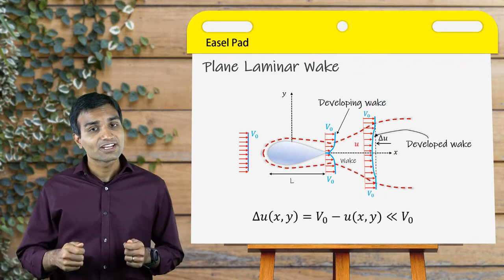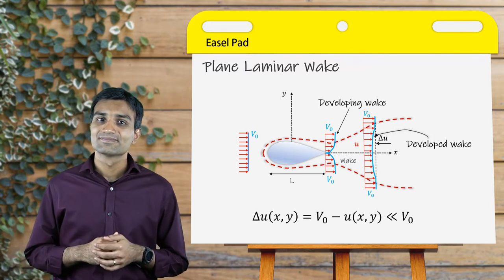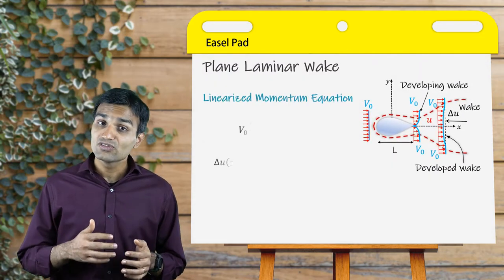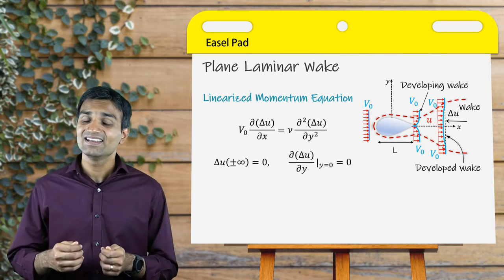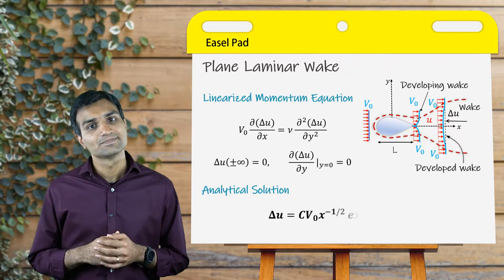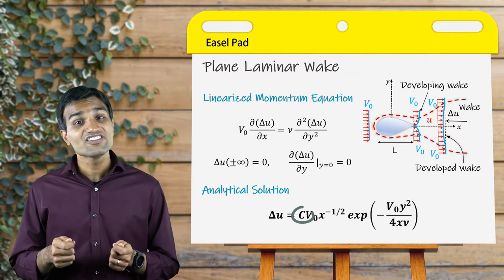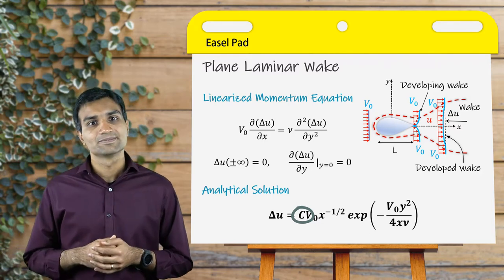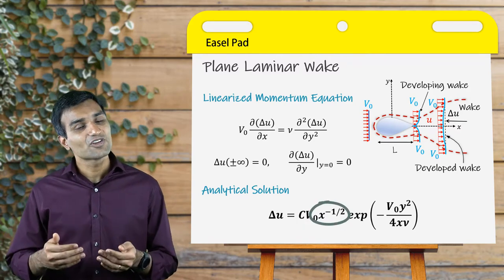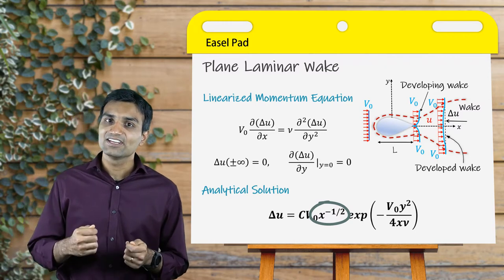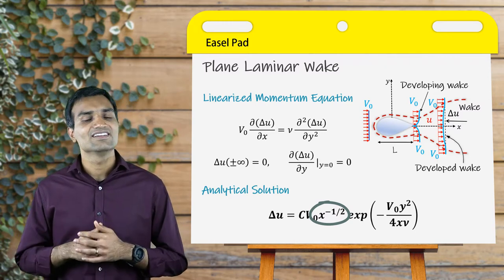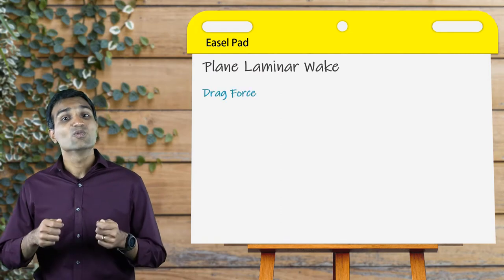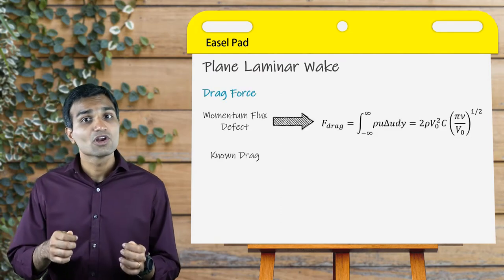Assuming this velocity defect to be small compared to the free stream velocity, we can linearize the convective form of the momentum equation. We use approximate boundary conditions to obtain the analytical solution for laminar wakes. Here, the constant C is obtained by equating the overall drag force to the momentum flux defect. The drag force estimated from the momentum flux defect is equated with a known value to obtain the final solution of the velocity defect.